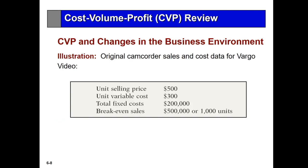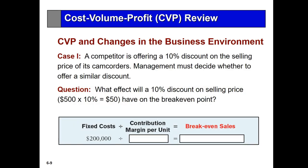We can also use CVP analysis in a changing business environment. You have to do profit planning — thinking about the future and playing what-if games. This model is well designed for that. For example, if a competitor is offering a 10% discount, should we also lower our price from $500 to $450? Our contribution margin would drop from $200 to $150, and our break-even in units would go up considerably to 1,333. The question is: would we sell that many units before becoming profitable if we offer that 10% discount?